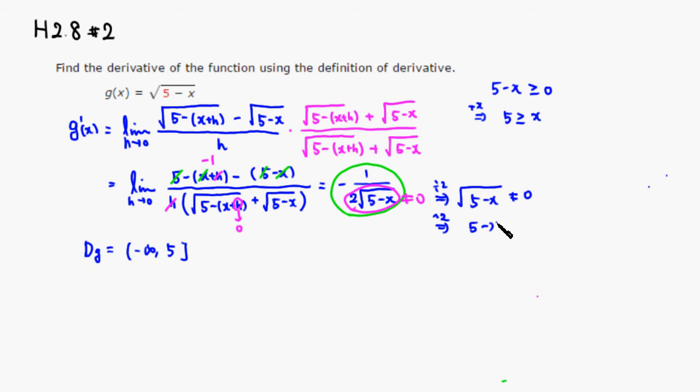And then we can square both sides, so it's 5 minus x cannot be 0. Then add x, so 5 cannot be equal to x.